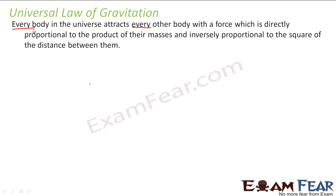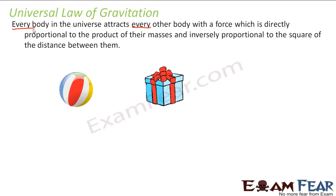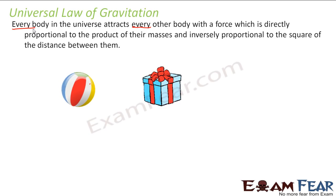If two objects are lying very close to each other, the distance between them is less, so the force with which they attract each other would be more. For example, if you have a ball and a box lying at some distance R, the universal law states that these two objects will tend to attract each other. But have you ever observed that if you keep a ball on a table and another box on the table, do they actually start moving towards each other?